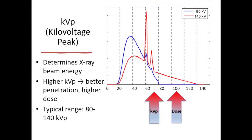kVP controls the energy of the x-ray beam. Higher kVP allows better penetration, making it useful for imaging denser structures such as bones. However, it also increases radiation dose, so it must be optimized for each patient.